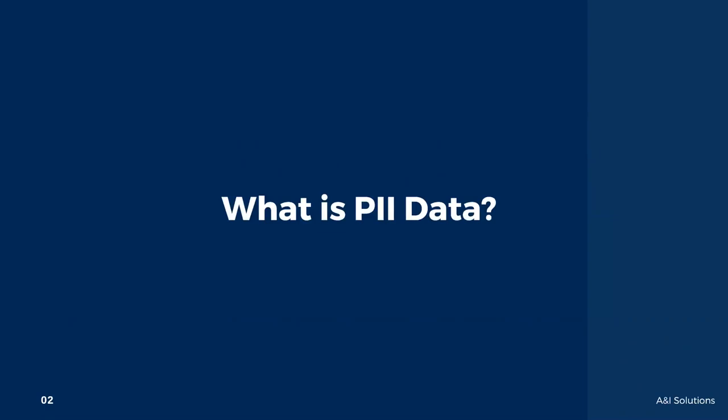The question is: what is PII data? According to Wikipedia, it can refer to personal data, also known as personal identification information — information that can be used on its own or with other information to identify, contact, or locate a single person or to identify an individual in context.